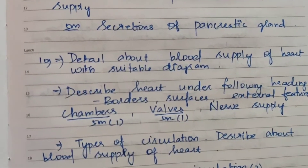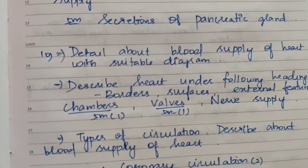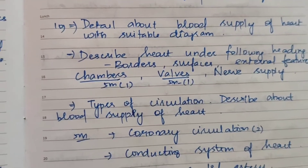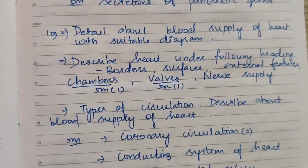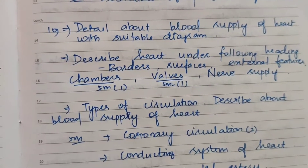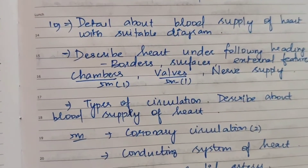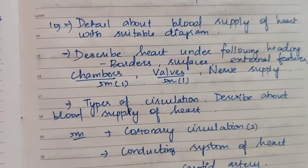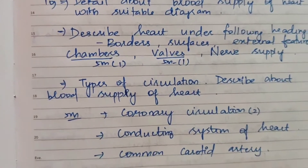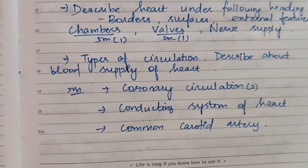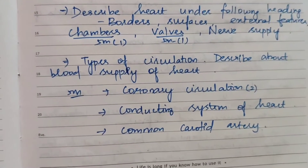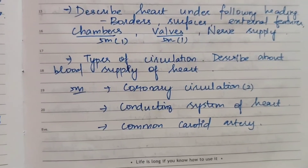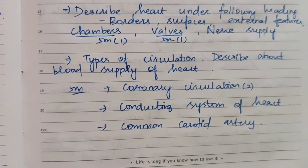The 10th topic covers heart-related questions: detail about blood supply of the heart with a suitable diagram. Describe the heart under the headings: border, surface, external features, chambers, valves, and nerve supply. Chambers of heart is 5 marks; valves of heart is 5 marks. Other 15-mark topics include types of circulation and blood supply of the heart. For 5 marks: coronary circulation (2 times), conducting system of the heart, and common carotid artery.